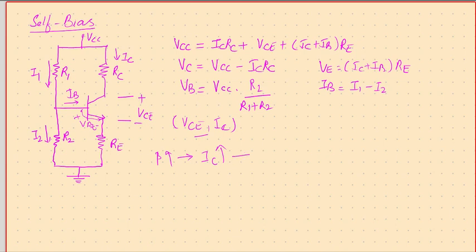IE increase means VE will increase. VE is given by IC plus IB times RE. If IC and IB are increasing, then VE will increase.